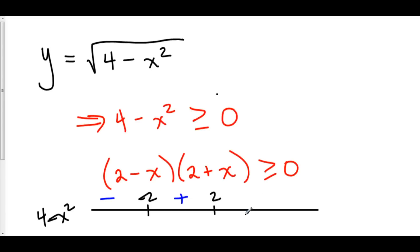Now, let's check to the right of 2. How about 3? 2 minus 3 is negative. 2 plus 3 is positive. Negative times a positive is a negative. So, again, if you plug in a number to the right of 2, you're going to get a negative number inside of this square root. And we can't have that.